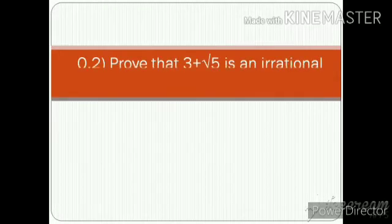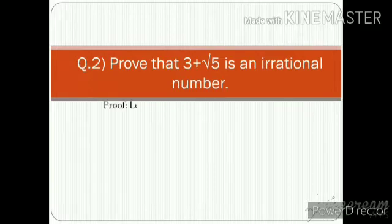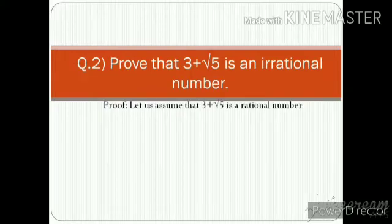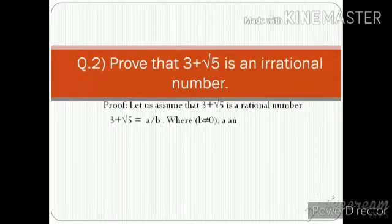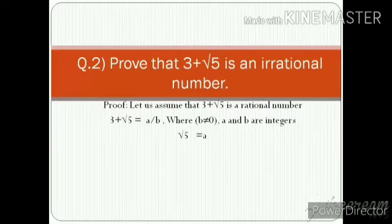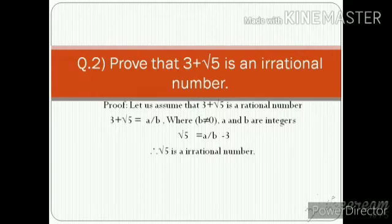Question number two: prove that 3 + √5 is an irrational number. As we know, √5 is an irrational number, but we have to assume it is rational. Let us assume that 3 + √5 is a rational number. Therefore, 3 + √5 = a/b, where b ≠ 0 and a and b are integers, using the rational number definition. Therefore, √5 = a/b − 3.